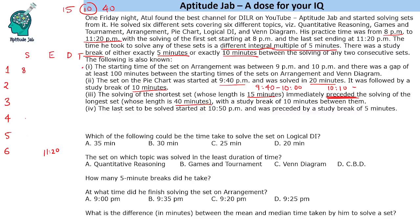Last information is handy in this case. It says that the last set to be solved started at 10:50 and was preceded by a study break of 5 minutes. So last set started at 10:50. That means it is of 30 minutes and there was a 5 minute gap in between. So that means the previous set ended at 10:45.